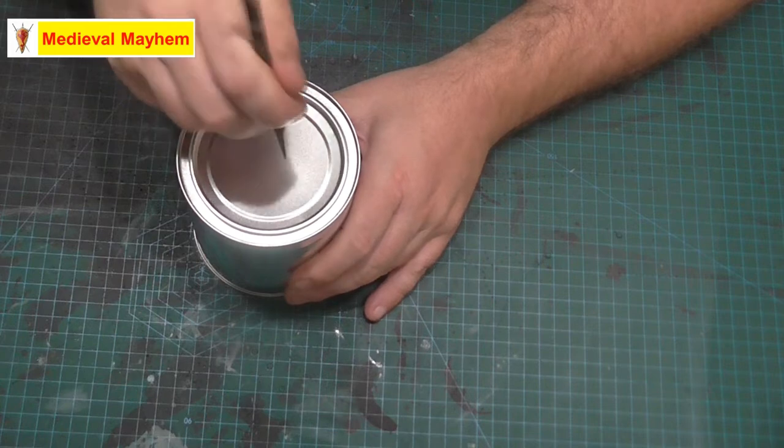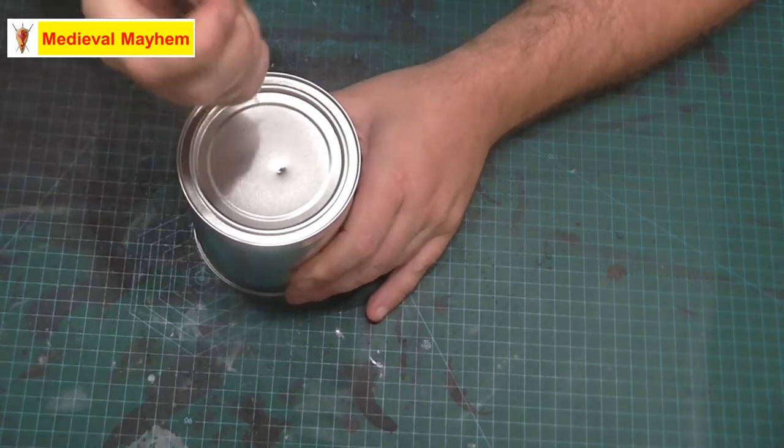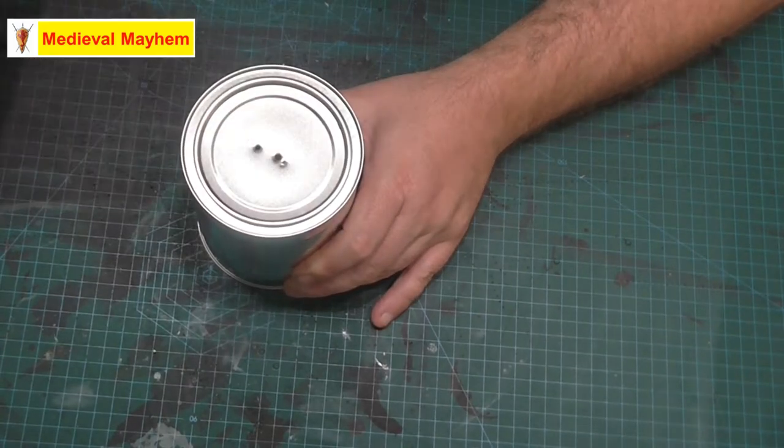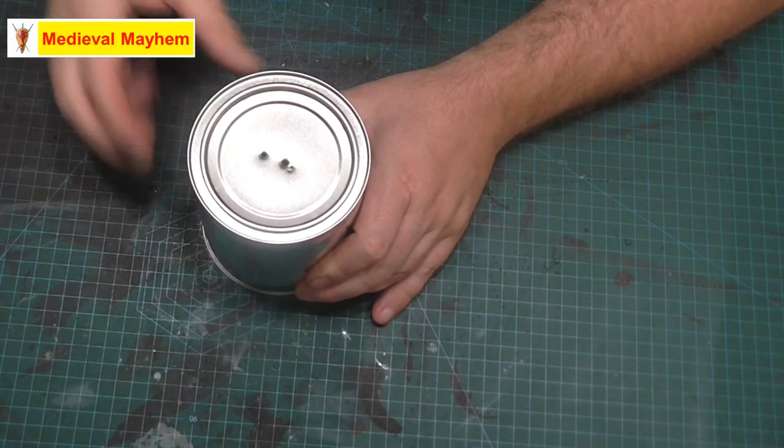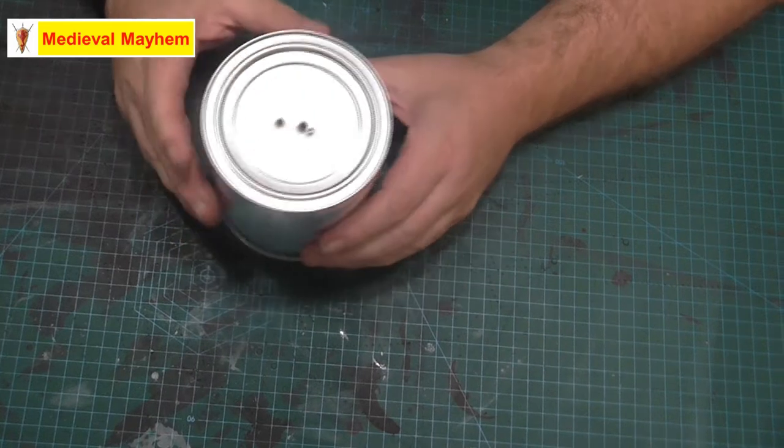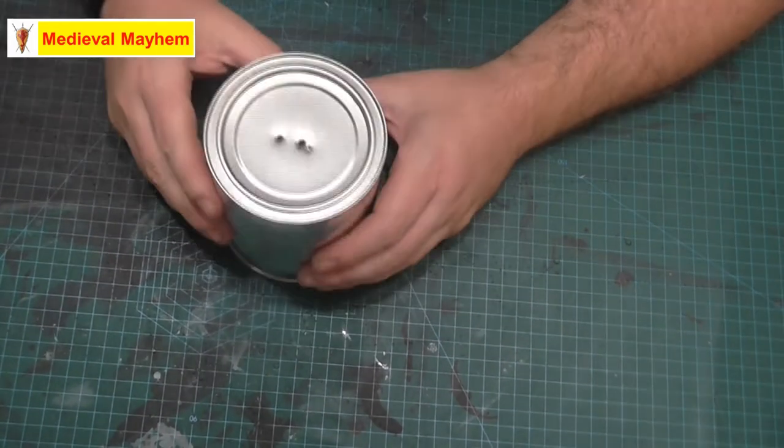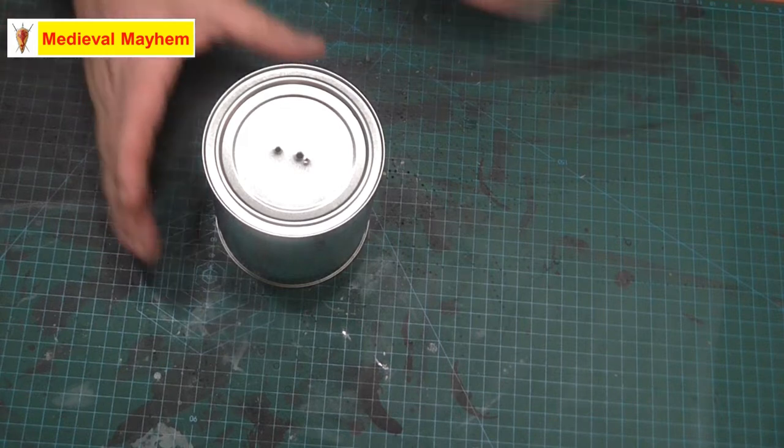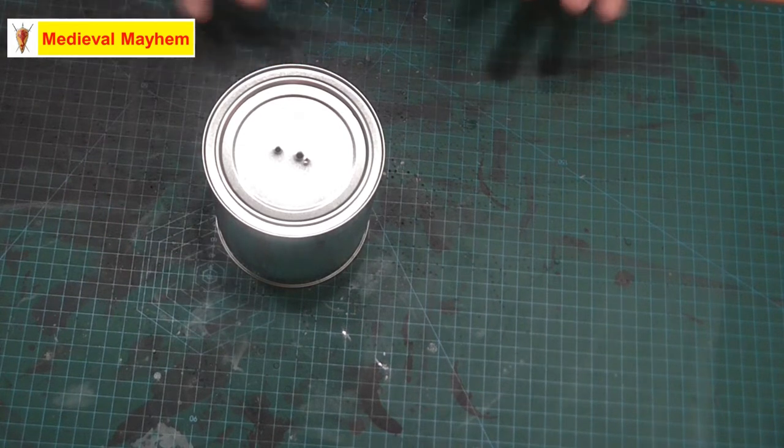Now what I'm going to do is punch a hole in the top. And this is a ventilation hole. There we go. It was a little bit more difficult than I anticipated. Now what I'm going to do is place this into an open fire for around about 10 to 15 minutes, just to allow the char cloth to form properly.